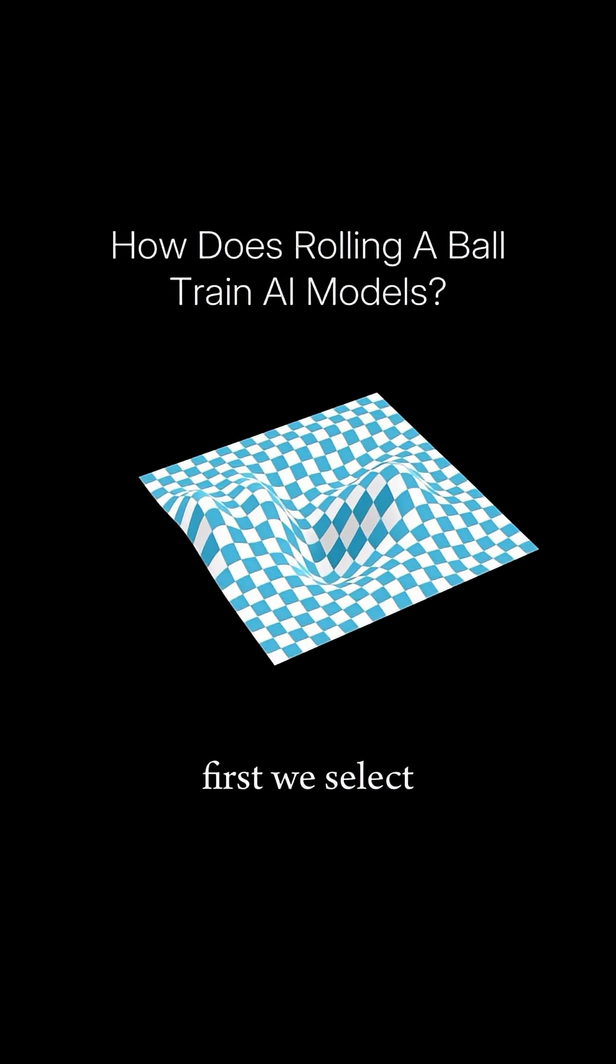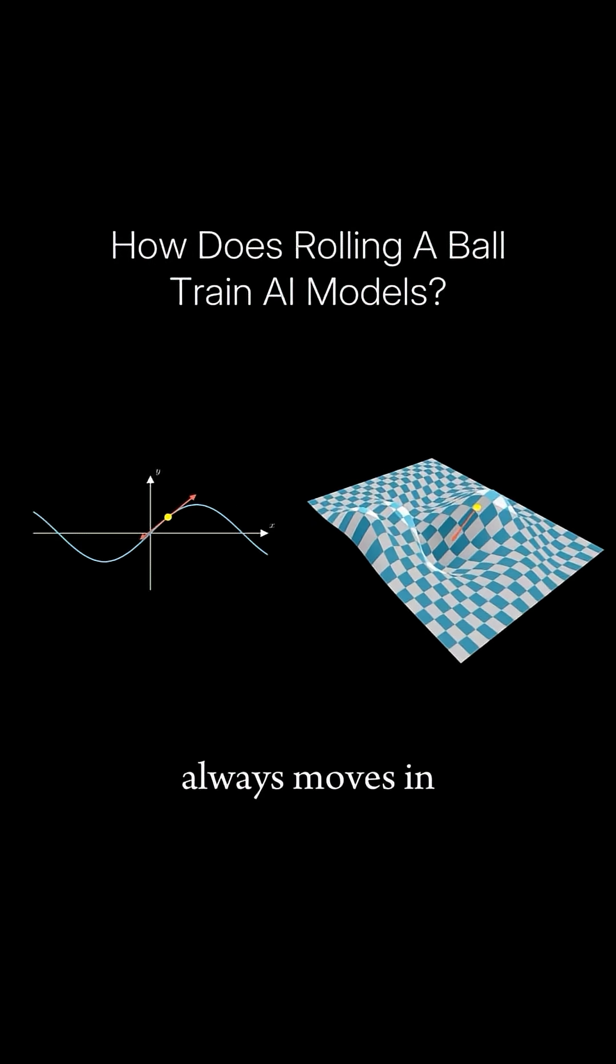First we select a random starting point, after which we'll need to come up with a sequence of steps that will take us to the minimum. Gradient descent always moves in the direction of the steepest descent.